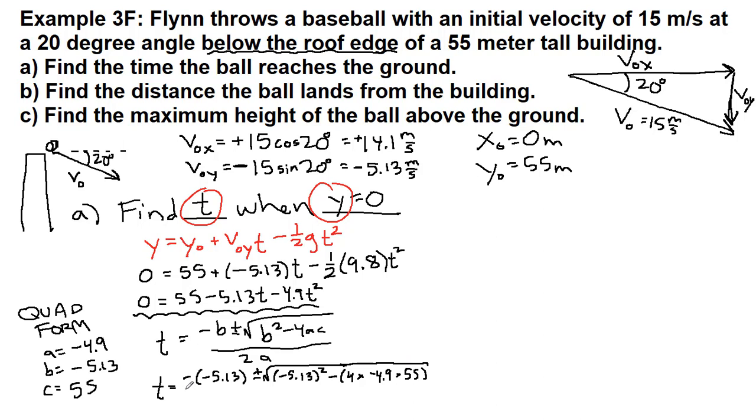All of that was under the square root, and then the whole entire thing is all over 2 times negative 4.9. Two negatives make a positive: 5.13 plus or minus.